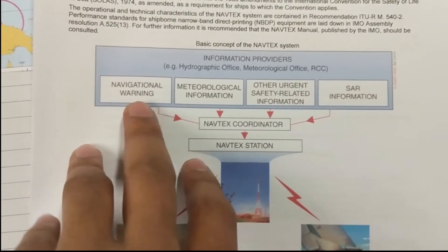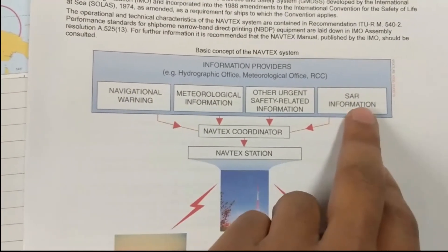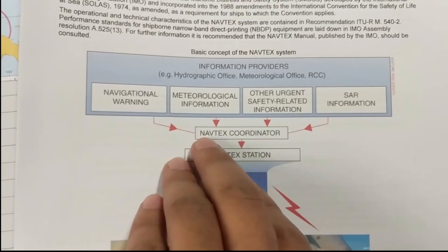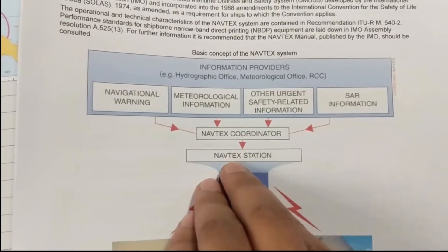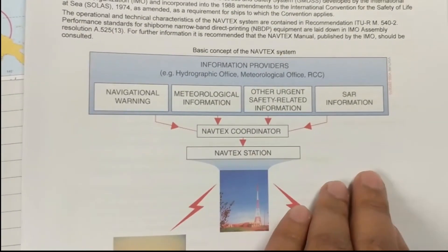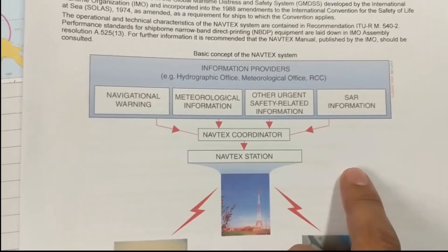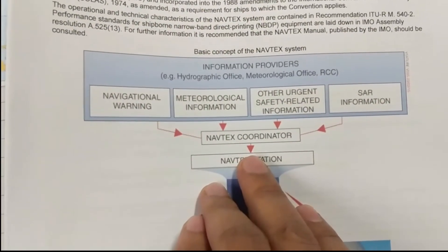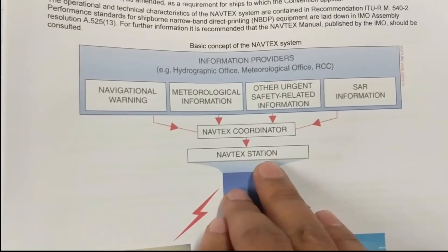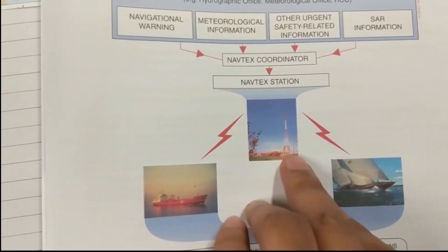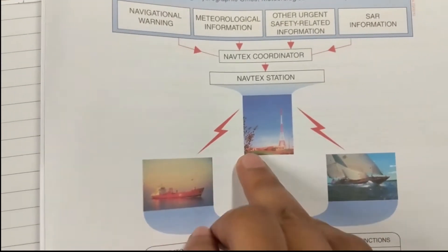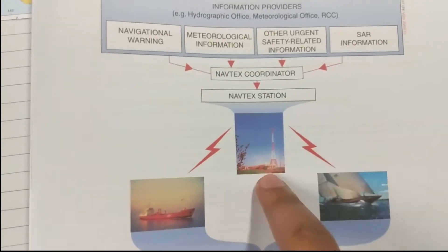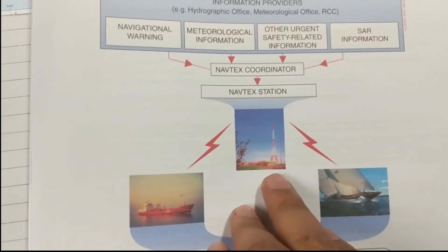The authorities provide navigational warnings, meteorological information, search and rescue information, and other urgent safety-related information. All these message types are coordinated by the Navtex coordinator and sent through either a Navtex station or via Sat-C SafetyNET. Vessels receive messages from Navtex land earth stations, and each Navtex station has a coverage of up to 300 to 400 nautical miles.